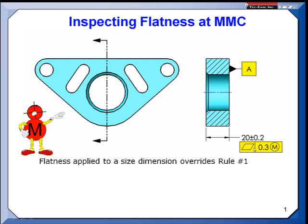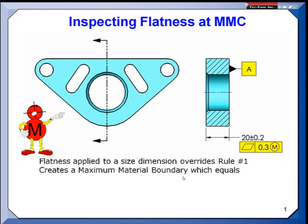By adding the flatness, we're saying it can be bigger acting — not bigger in size, but bigger acting than 20.2. So it could be at 20.2 and be bowed as much as .3. That creates a maximum material boundary, which is equal to the largest size plus the .3 flatness tolerance.